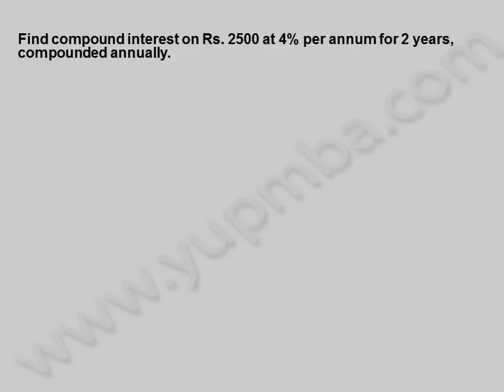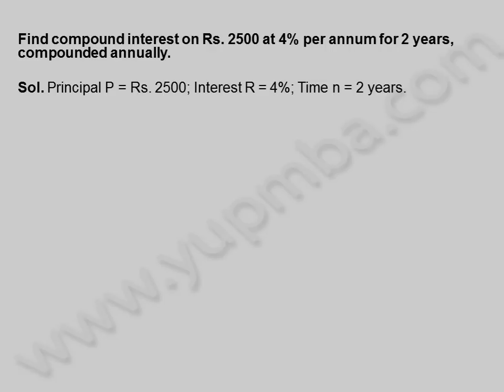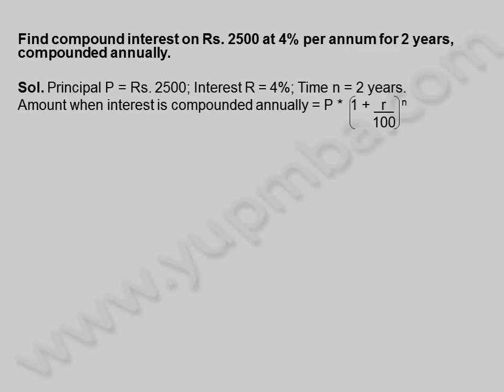Find compound interest on 2,500 rupees at 4 percentage per annum for 2 years, compounded annually. Principal P is equal to 2,500 rupees. Interest R is equal to 4 percentage. Time N is equal to 2 years. Amount when interest is compounded annually is equal to principal into 1 plus R by 100, whole power N.